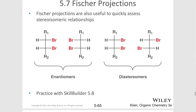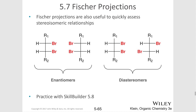Another thing that Fischer projections are really useful for is to determine whether molecules are enantiomers or diastereomers to each other. For example, this molecule has two chirality centers, where each center has an R group attached, plus a bromine, a hydrogen, and the rest of the molecule. If you put both of the bromines on the right, you can quickly draw its enantiomer by just swapping the configuration at those horizontals — putting the bromine on the left and the hydrogen on the right.